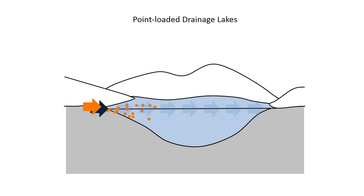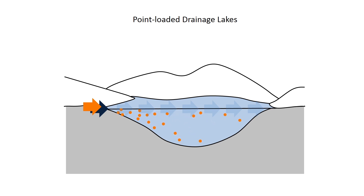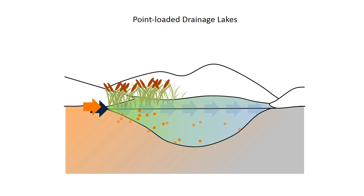In drainage lakes with a point nutrient source, the organisms closest to that source thrive thanks to the high concentration of nutrients. The nutrients are consumed by algae and plants, or absorbed by sediments. Consequently, nutrient concentrations are lower away from the source.